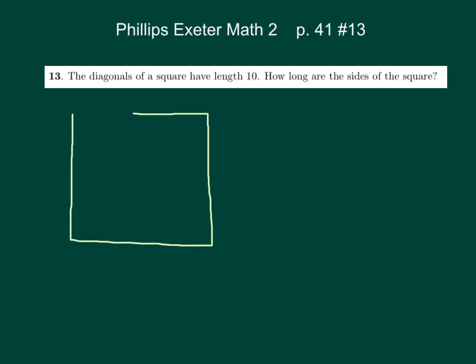We have a square, and what we know about squares is all of these sides are equal and all the angles are 90 degrees. We want to find the side length, we'll call it S,